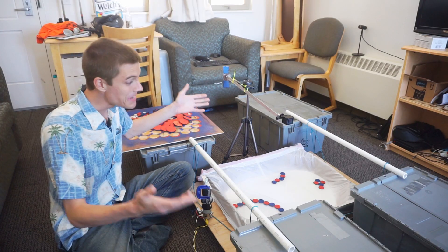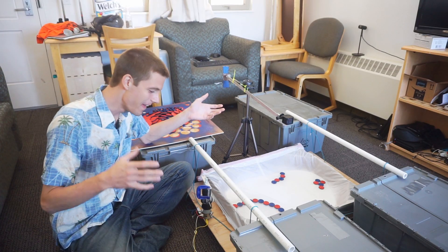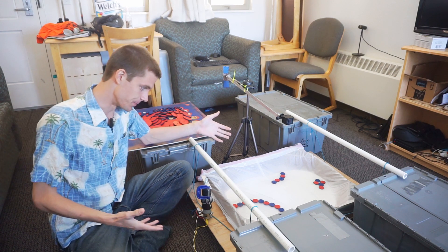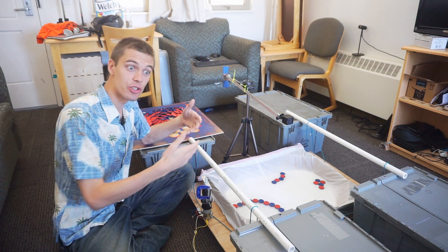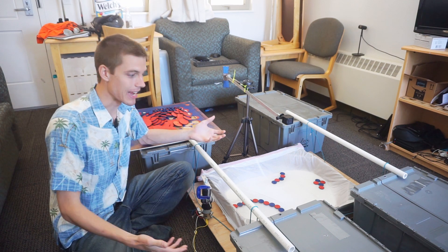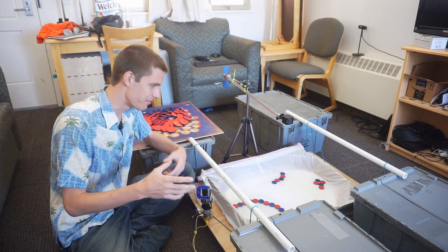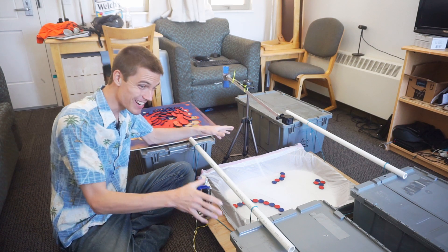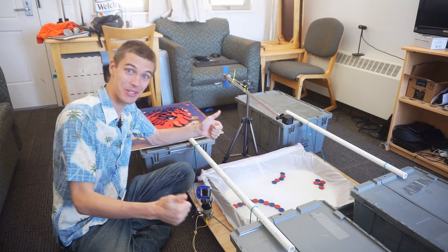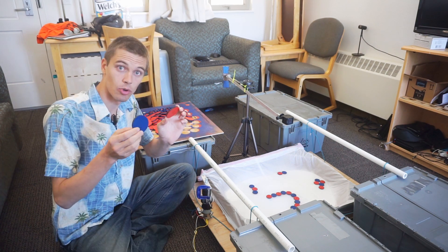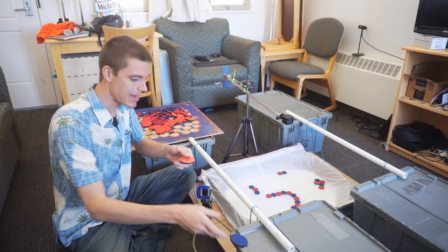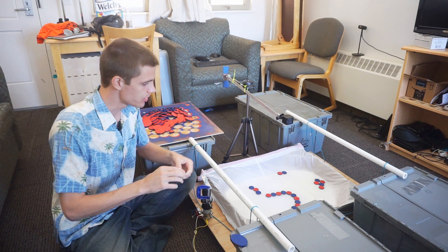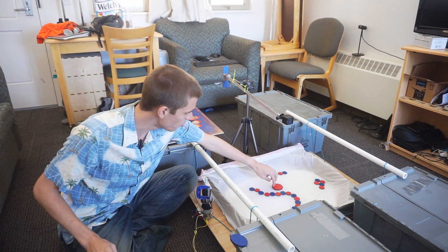This thing that's taking up basically the entire living room right now is a physical system that obeys very simple rules that we can use to produce very complicated behavior. This is a demo that I've been thinking about for a long time and I kind of just wanted to see it work, but hopefully it makes a cool segment in a video too. All of these red and blue circles are magnets that are embedded in pieces of wood so that they float in this pool of water.